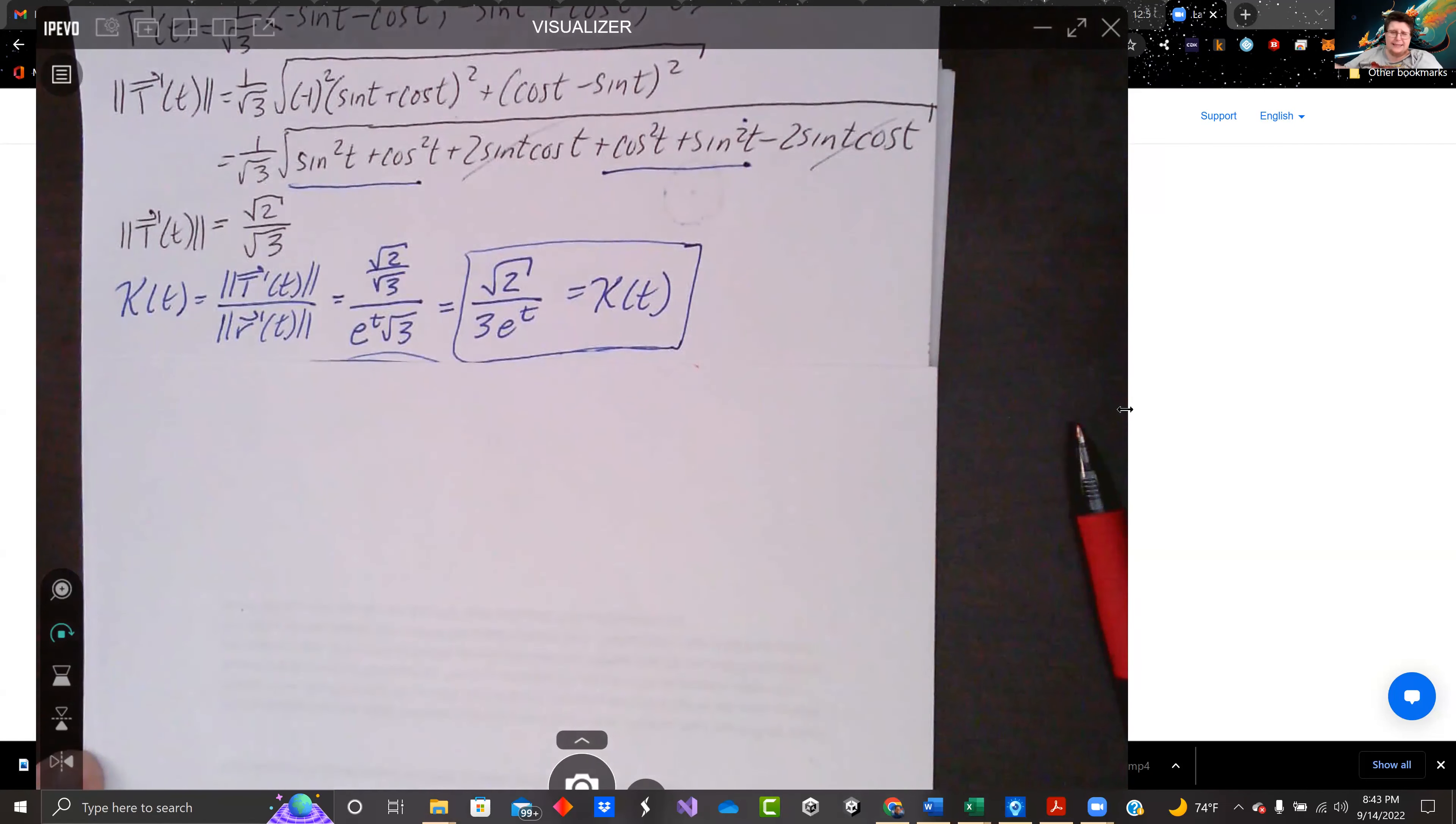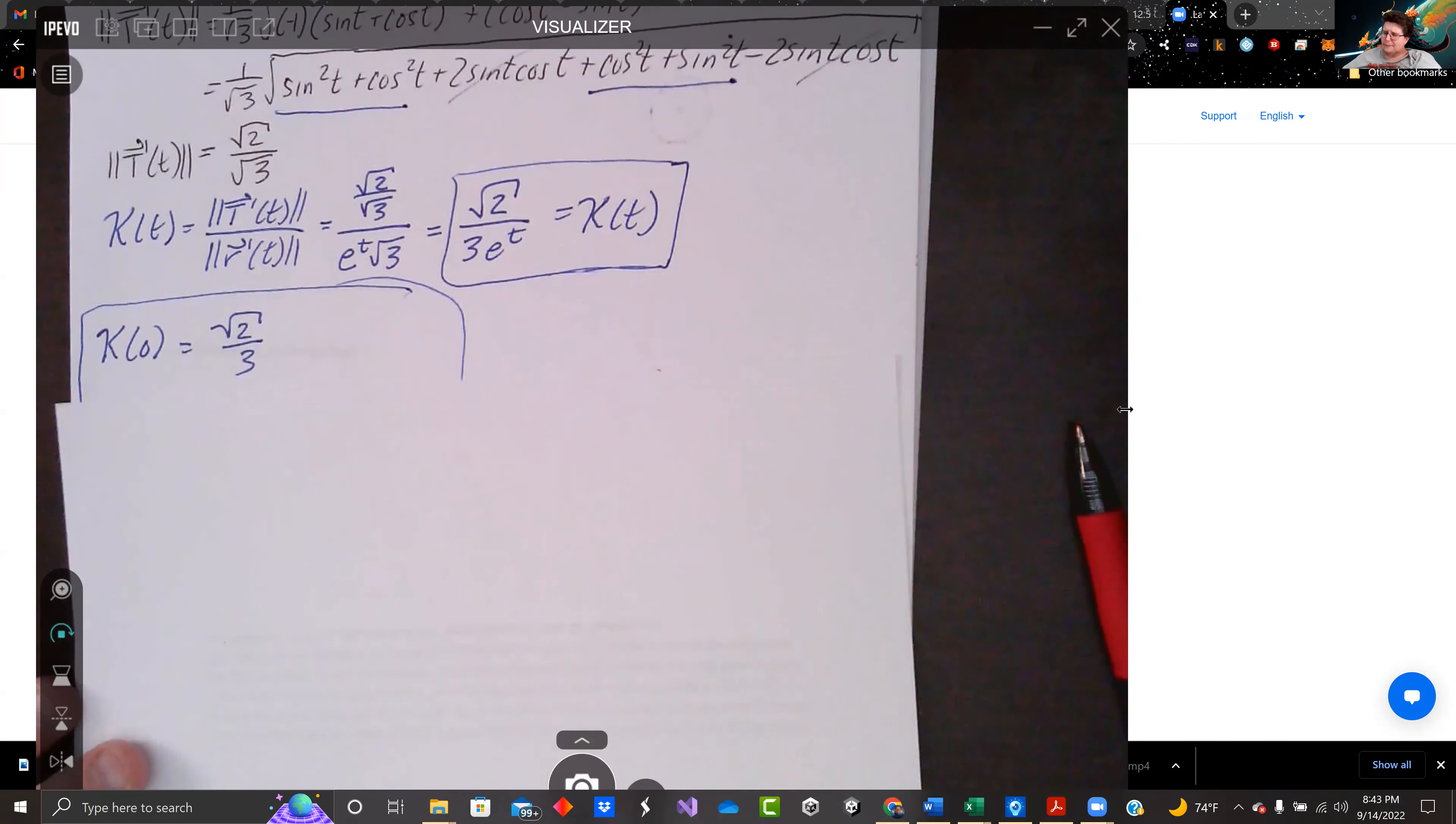We were asked to evaluate this at t equals zero. We plug it in. Kappa at zero, e to the t is just one. So we got root two over three. And the radius of curvature is one over kappa. So we flip that bad boy over three over root two. And we rationalize the denominator. And that's it for that.